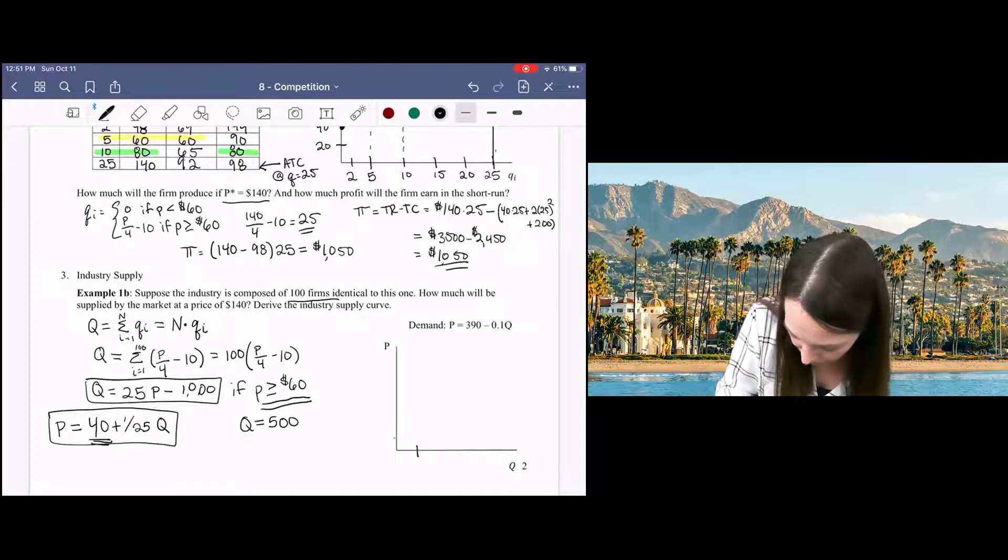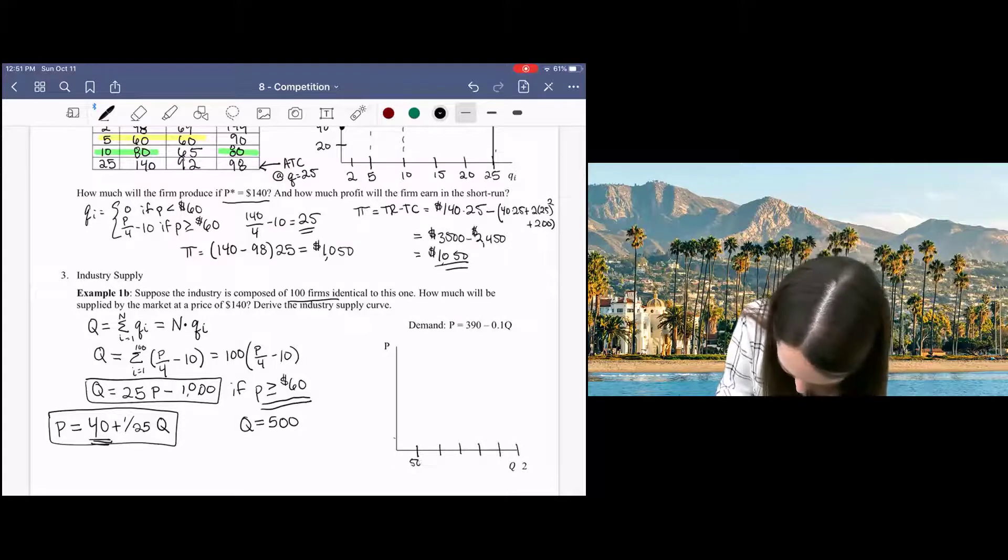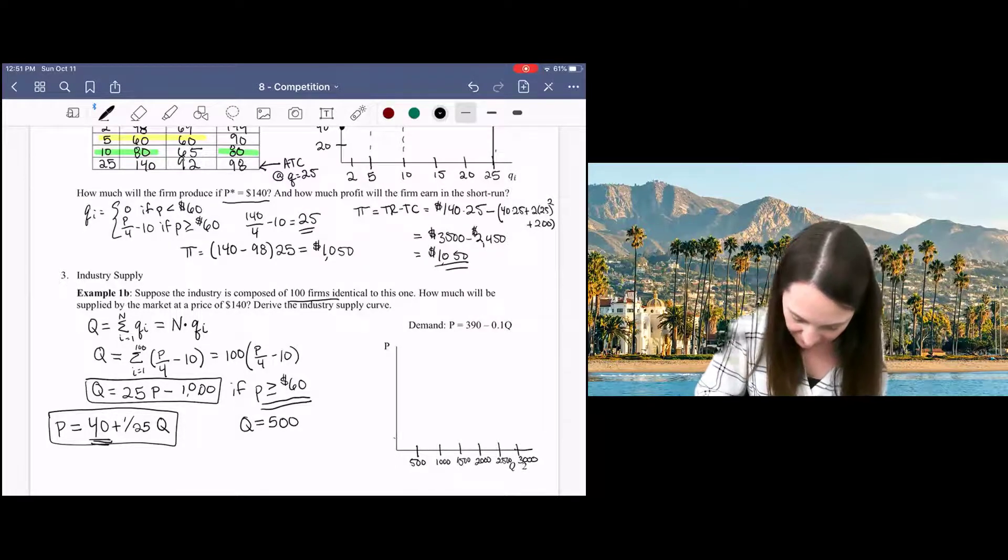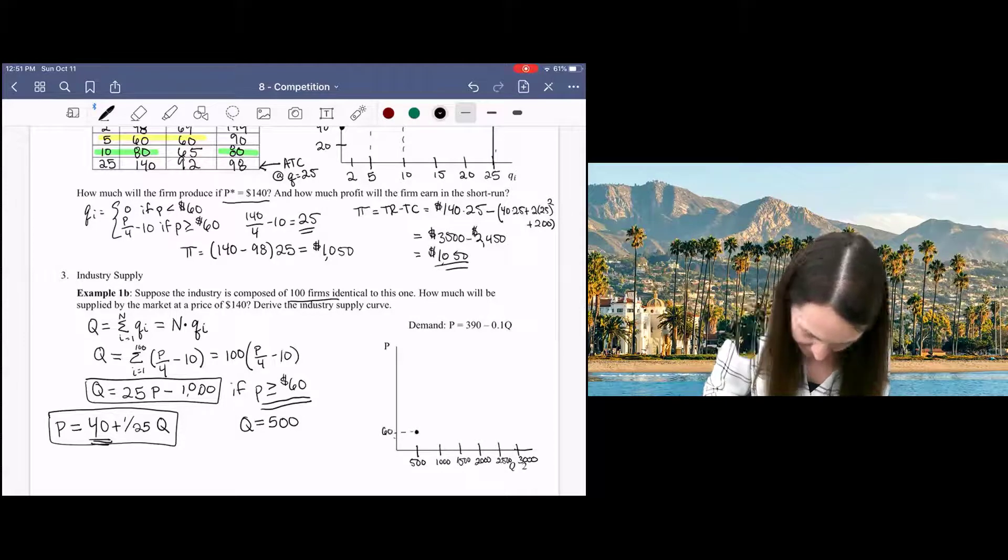Okay, so I'm going to do 500, 1,000, all the way out to 3,000 here. And then I know at 500, this is going to start here at 60.